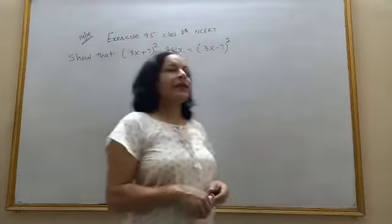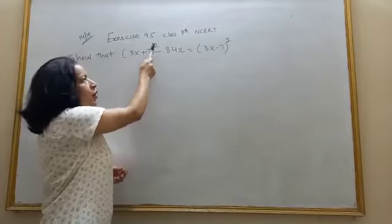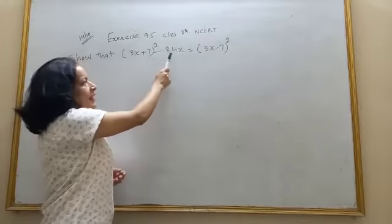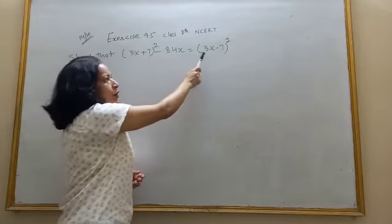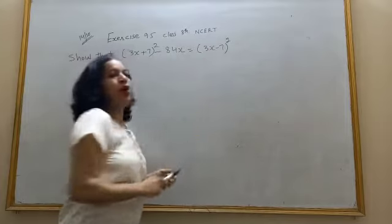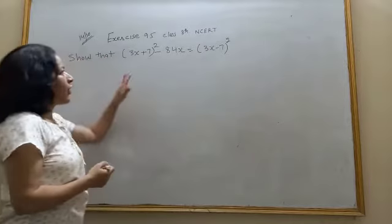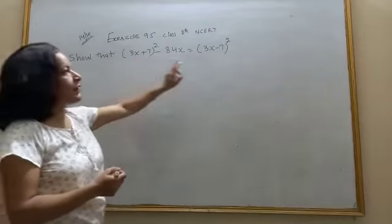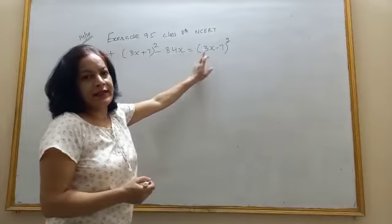Show that (3x + 7)² minus 84x is equal to (3x - 7)². You have to show left hand side is equal to right hand side.